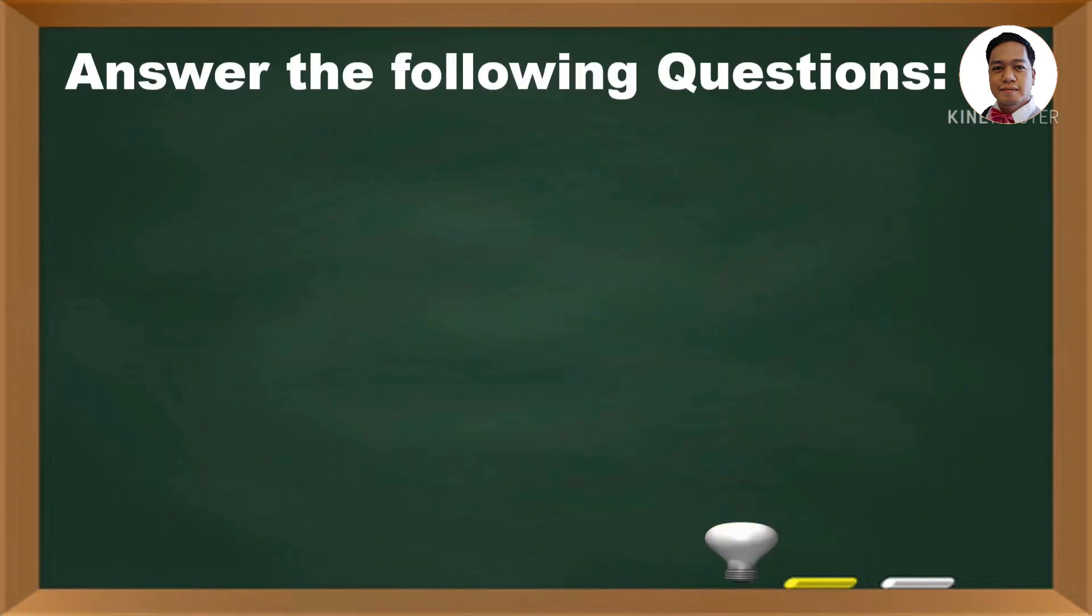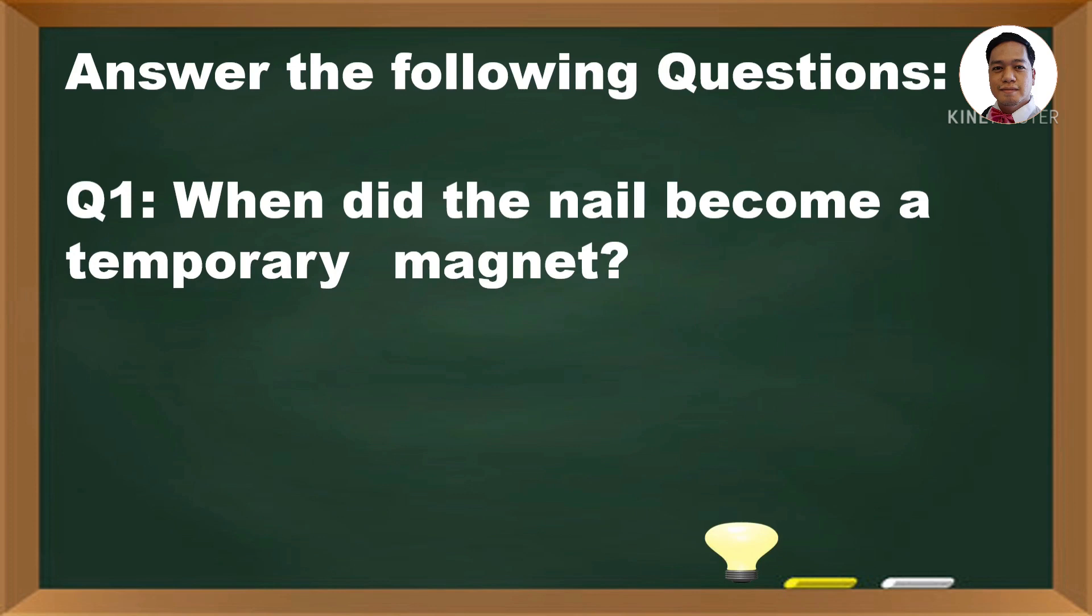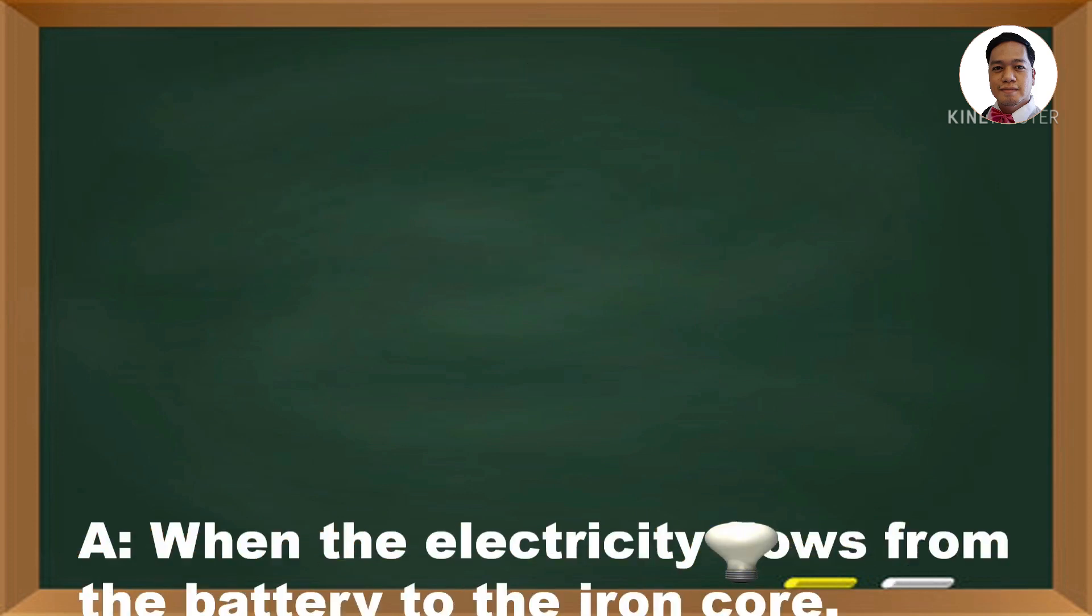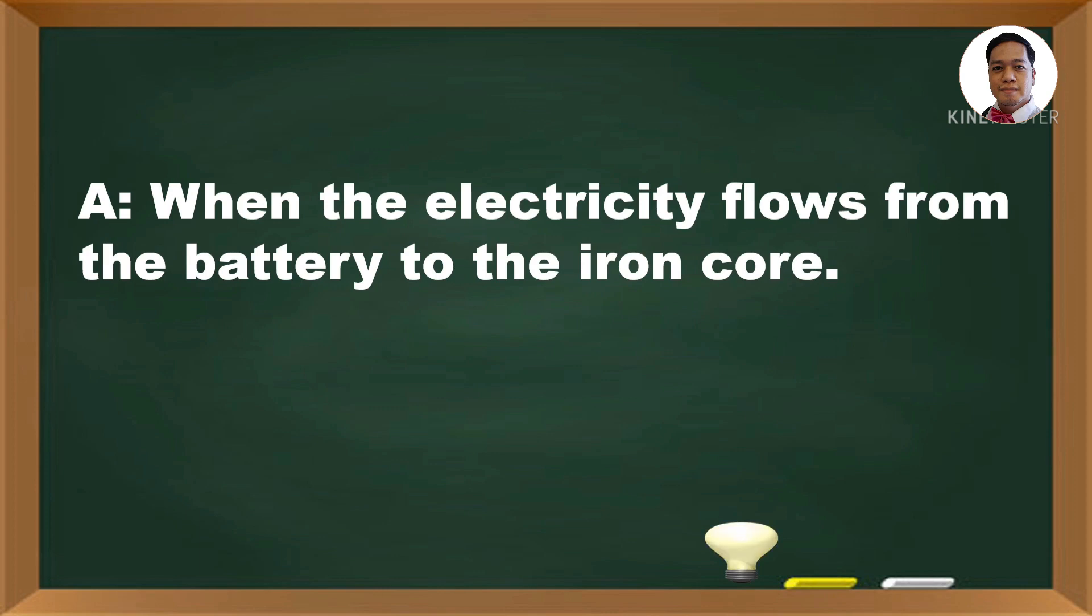Answer the following questions. When did the nail become a temporary magnet? When the electricity flows from the battery to the iron core.